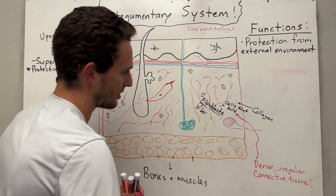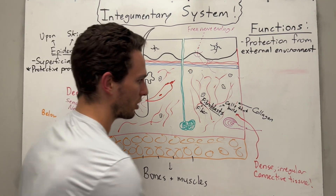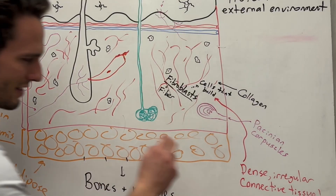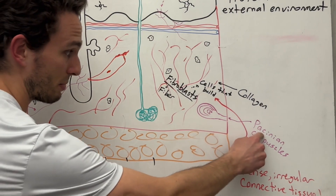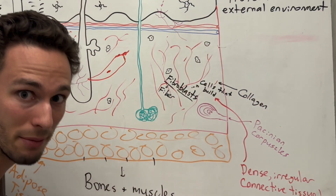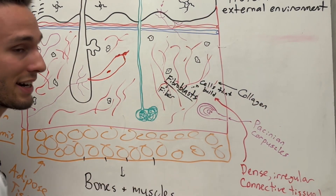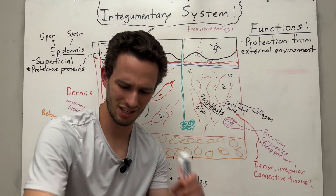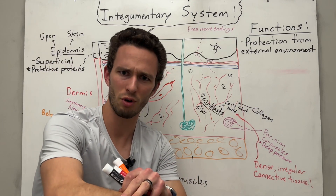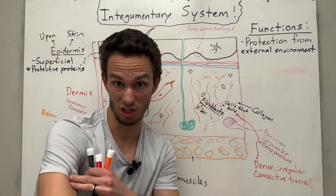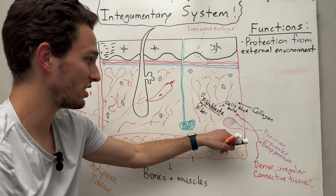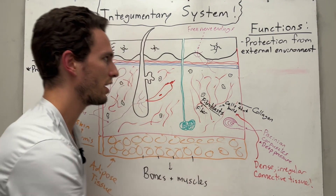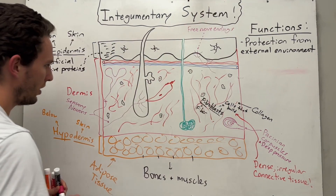You also have these guys down here called Pacinian corpuscles. I like to think of these as like the Pacific Ocean — really deep in the skin — because they're going to detect deep pressure. So if something is sitting on top of you for a while, maybe tight-fitted clothes, these Pacinian corpuscles are going to pick up that deep pressure being forced down from your skin.